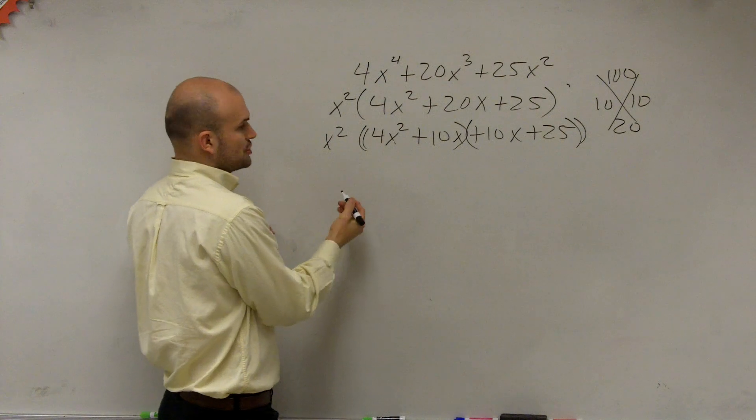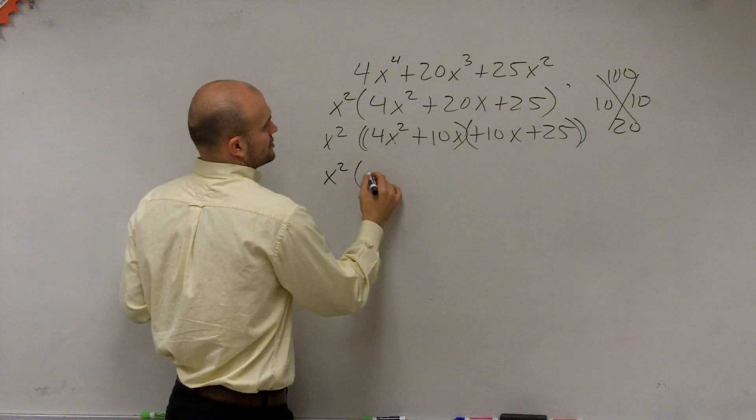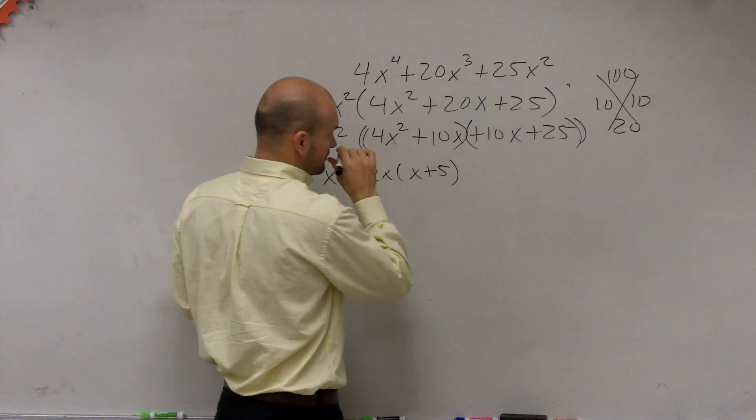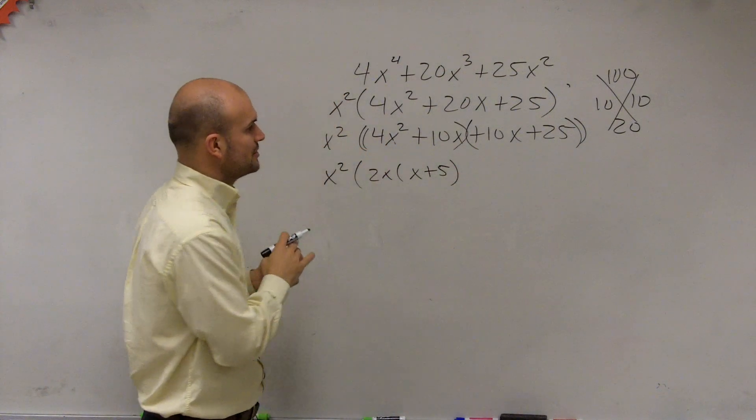What do the first two have in common? A 2. So you could factor out a 2x, and you get x plus 5. Factor out the next one. You can factor out, again, for that one, you can factor out a 5.